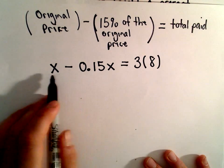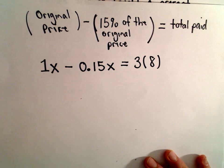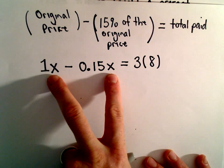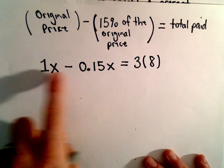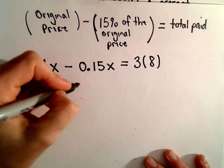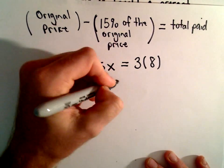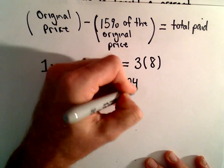So this is a nice linear equation. We can combine like terms on the left side. We have these like terms of X to the first power. So 1 minus 0.15 will be 0.85X. 3 times 8 is going to give us 24.